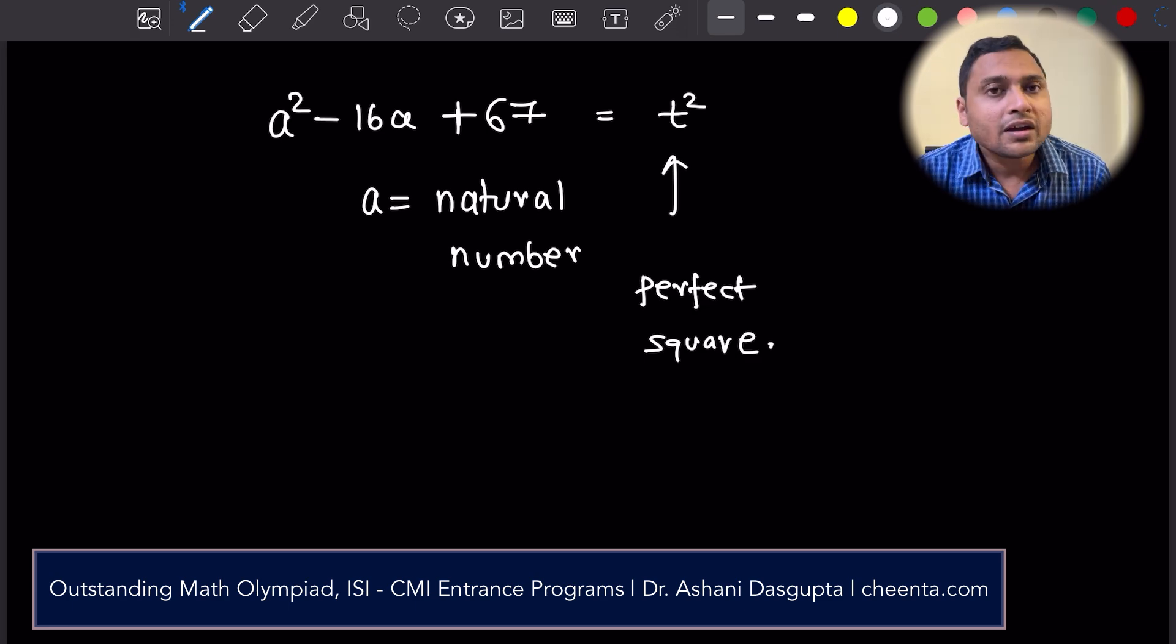How do we go about using algebraic identities and properties of numbers to solve this problem? The first observation,